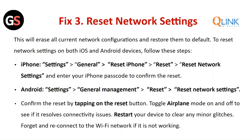For Android, go to Settings, then General Management, click on Reset and then tap on Reset Network Settings. Confirm the reset by tapping the Reset button again. Toggle airplane mode on and off to see if it resolves the connectivity issues, then restart your device to clear any minor glitches. Forget and reconnect the Wi-Fi network if it is not working.